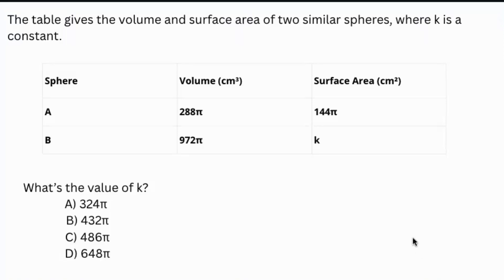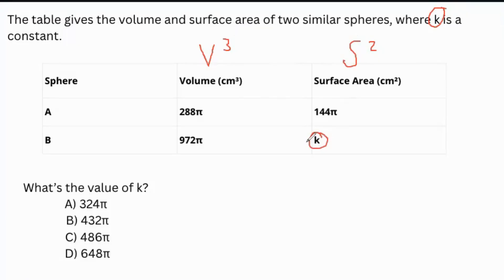Let's talk about how to solve this next problem. They give you a table and ask you to compare volume V to the third power, and surface area S to the second power. They ask you to find the value of K, which is a constant. You have two spheres with two sets of volumes and two sets of surface areas where you're trying to find one. This should signal that we're talking about ratios — the proportion and relationships between sphere A and sphere B.